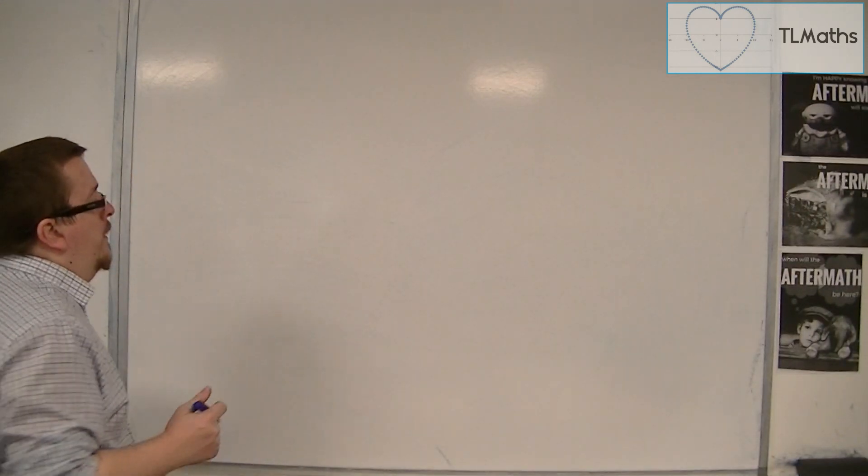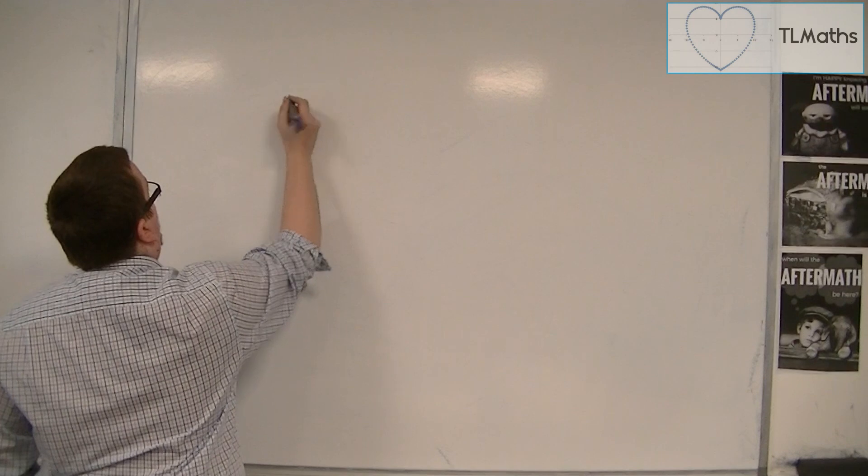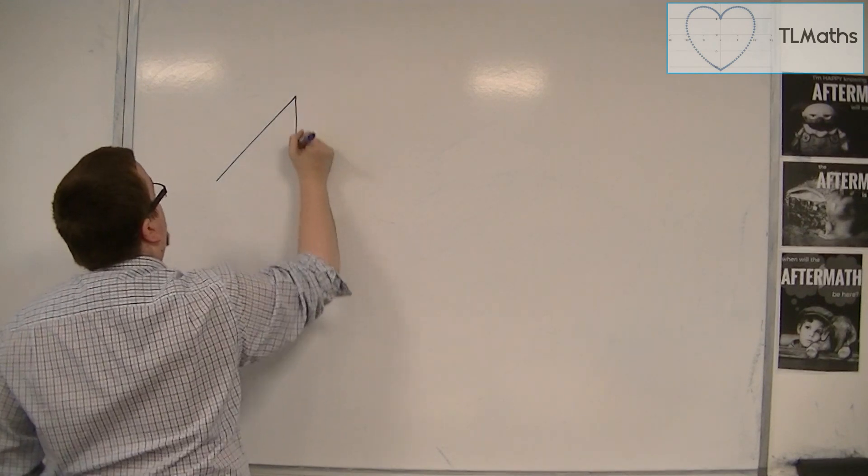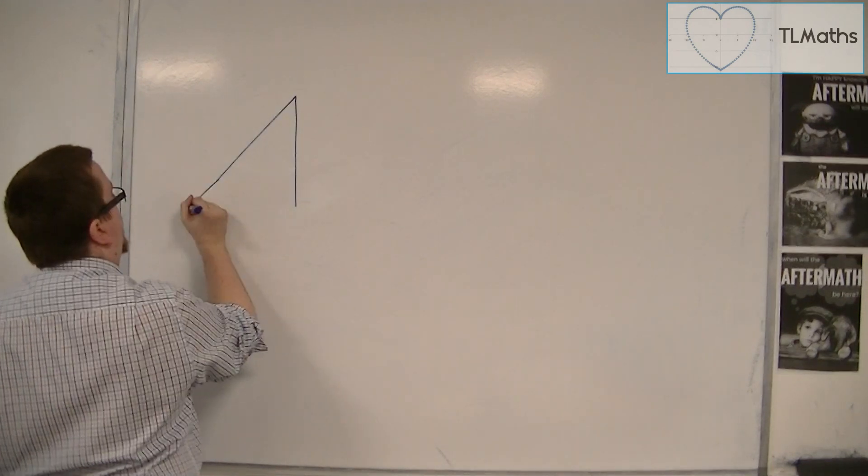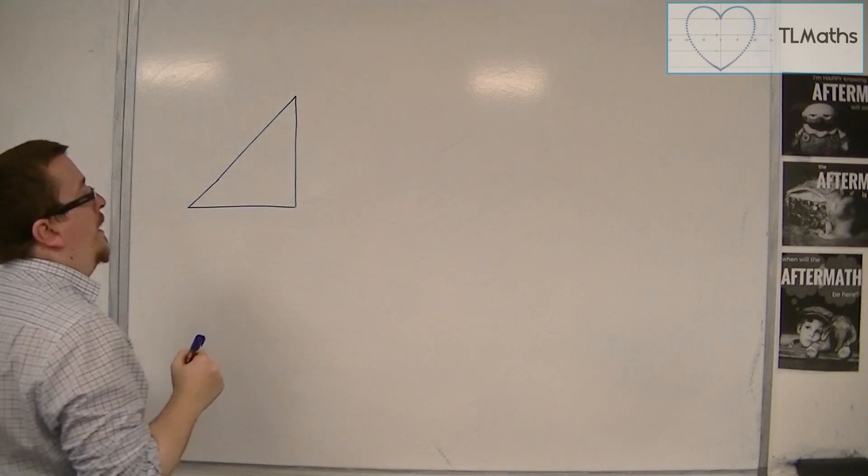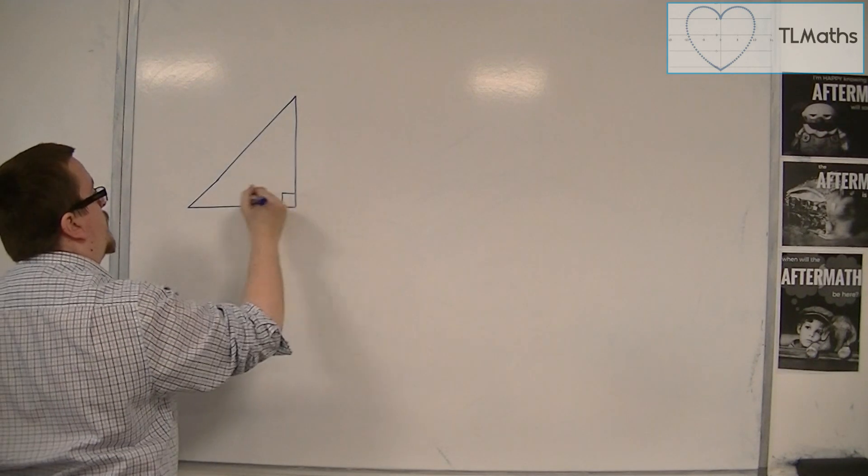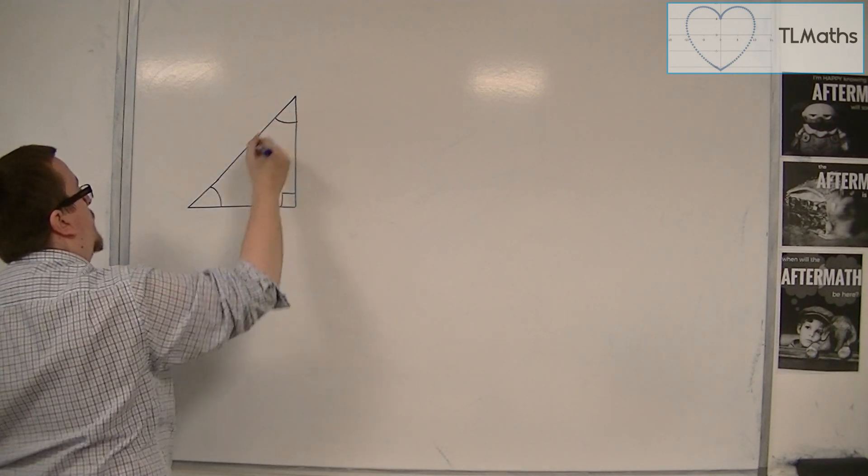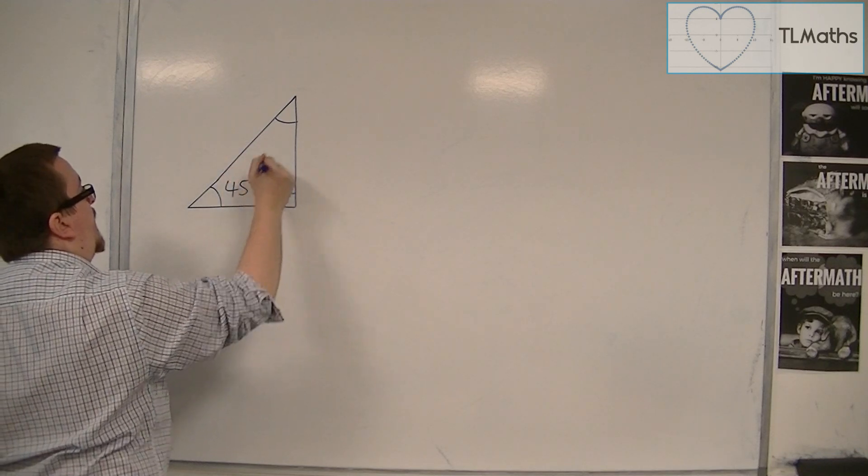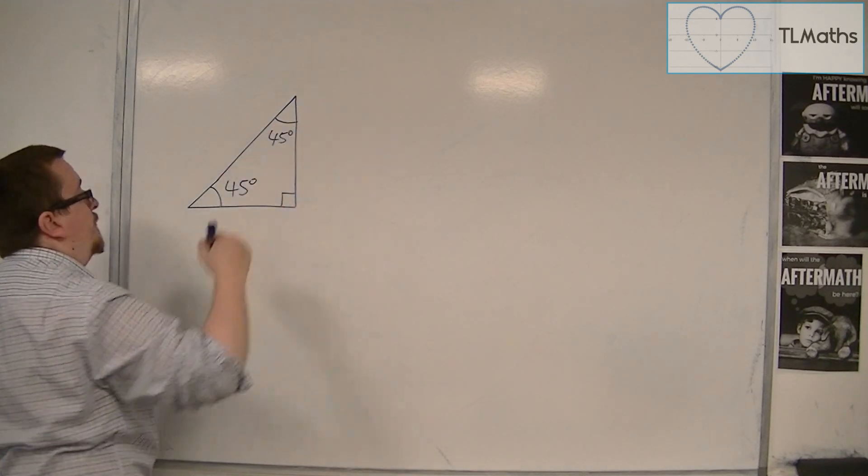So the two triangles, the first one, well, they're both right-angled triangles. Let's say that first. And the first one is a right-angled isosceles triangle. And so that means that both of these angles are 45 degrees.